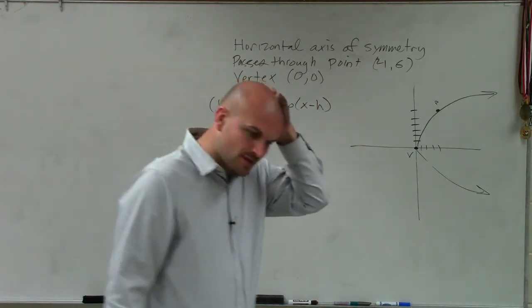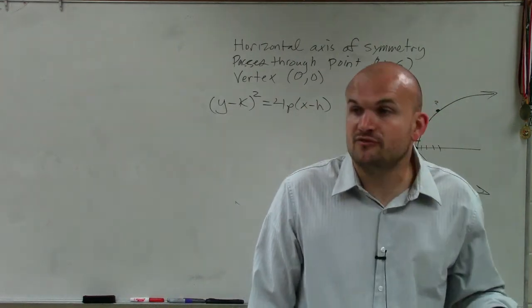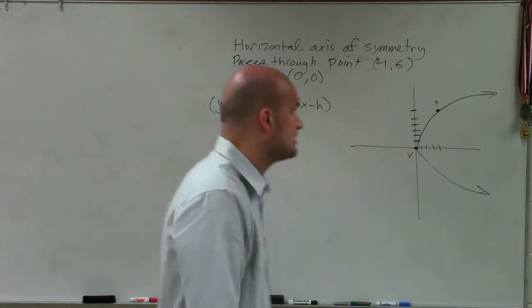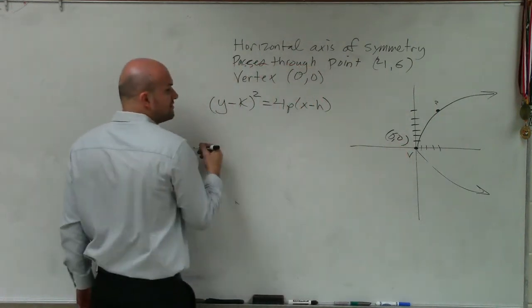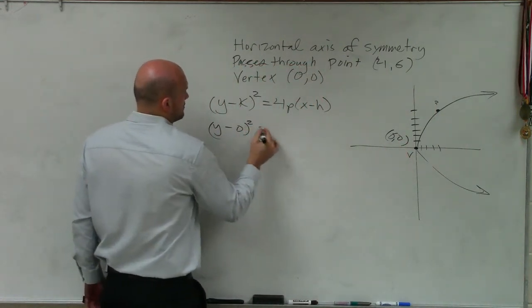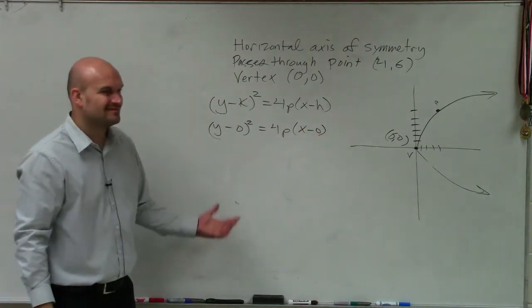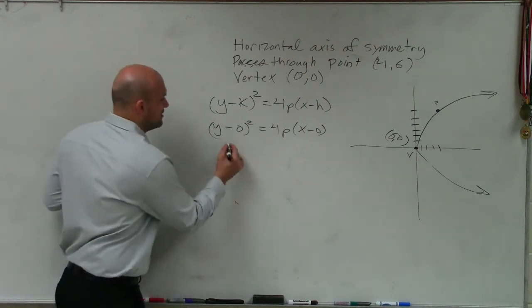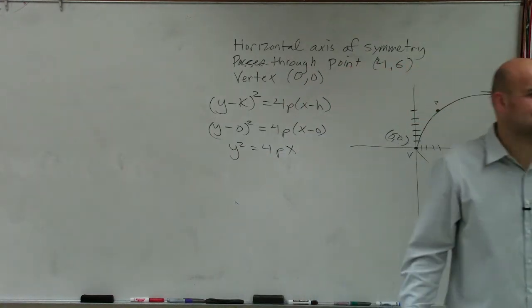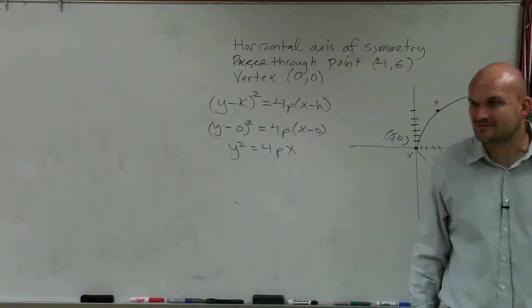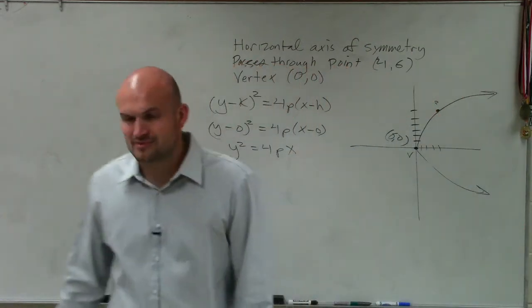Y minus k squared equals 4p times x minus h. So now, we know that the vertex represents h, k, right? We know the vertex is 0, 0. So let's put 0 in for k and for x. But this is kind of boring, just subtracting zeros. Let's just simplify this. We know the vertex is at 0, 0, so we don't need to write minus 0. It's not going to change the answer.